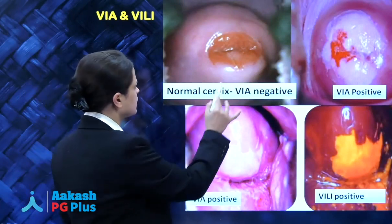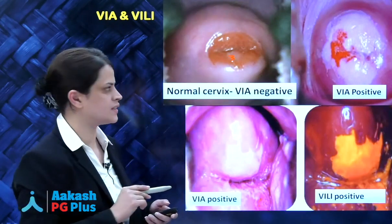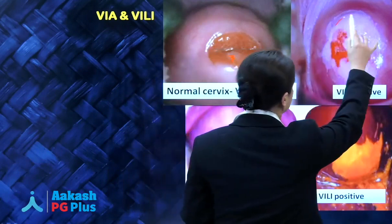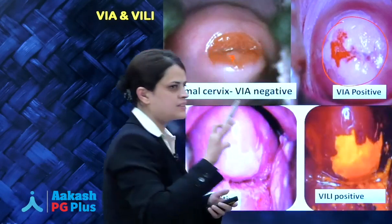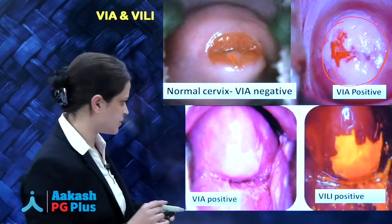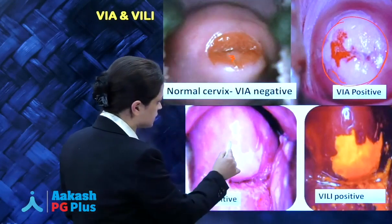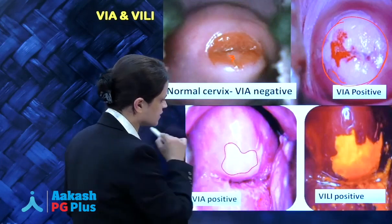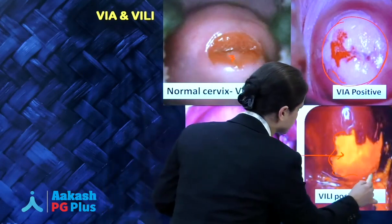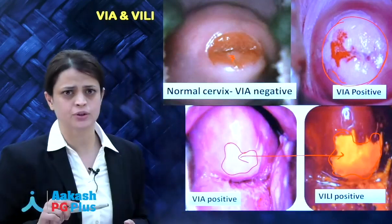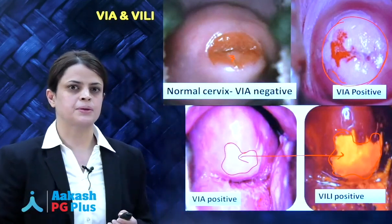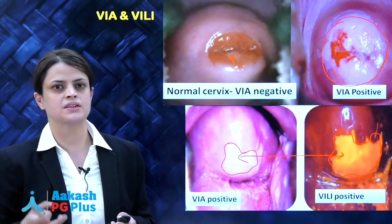Here we have the images. This is a normal cervix stained with acetic acid — essentially normal with maybe a little faint aceto-whitening, so this is VIA negative. Here we can see an obviously VIA positive lesion: a dense aceto-white lesion involving circumferentially the whole of the transformation zone with very well-defined borders. Similarly, the anterior lip of the cervix shows a distinctly aceto-white VIA positive lesion, which corresponds to the iodine-negative deep mustard VILI positive lesion. Healthcare workers can then send these women for directed biopsies and further management.